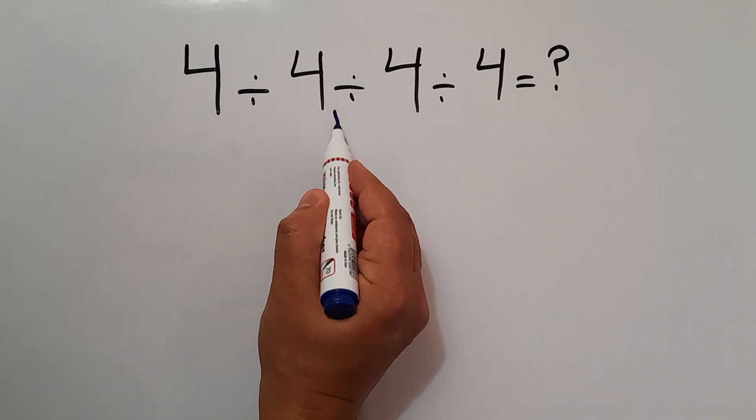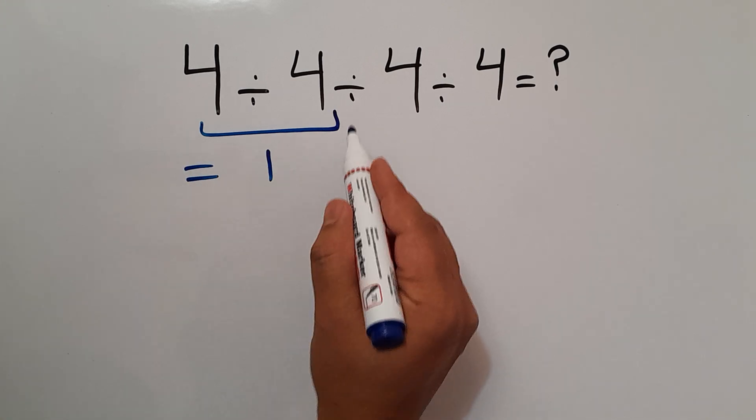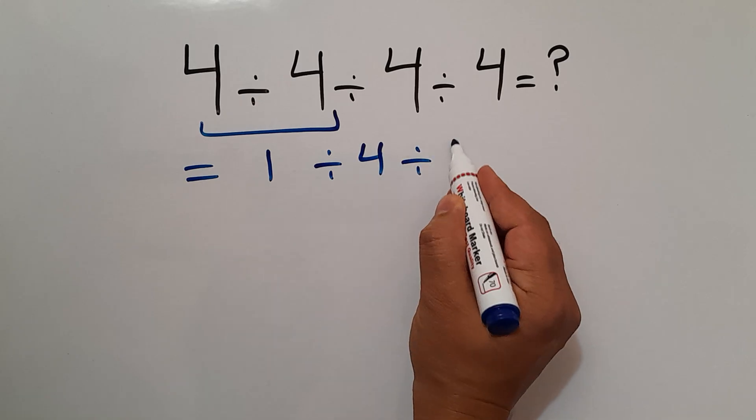4 divided by 4 gives us 1. So we have 1 divided by 4 and again divided by 4.